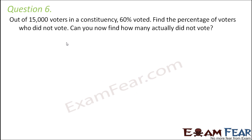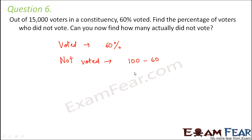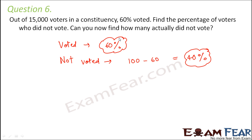Question number 6: Out of 15,000 voters in a constituency, 60 percent voted. Find the percentage of voters who did not vote. If we assume the total number of voters is 100, then 60 out of them voted. So the number who did not vote is 100 minus 60, which is 40. This means 40 percent of the voters did not vote — because 60 percent is based on a total of 100 voters.